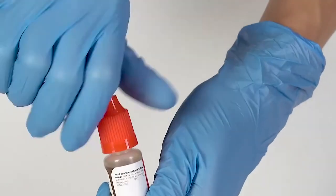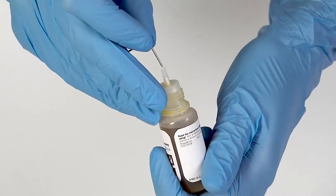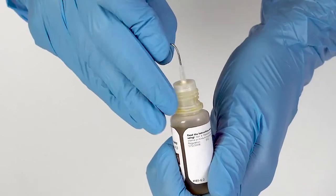To open a bottle containing a reagent, push the cap down and turn it. Pierce the bottle nozzle with an unbent paper clip.